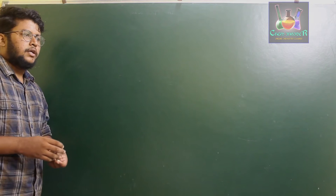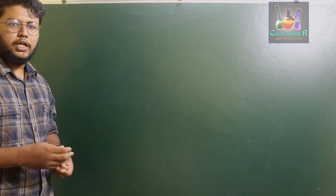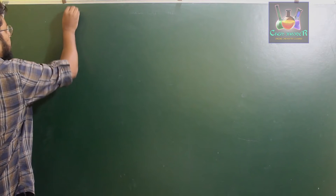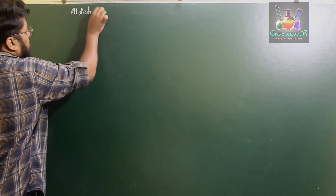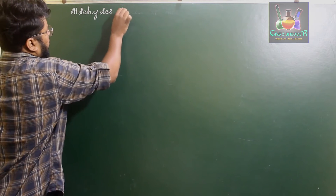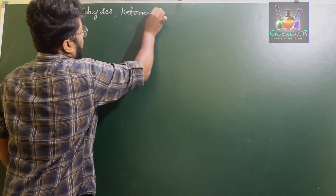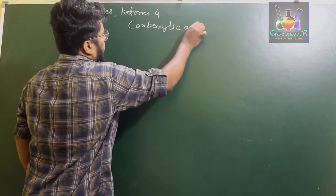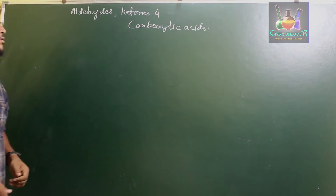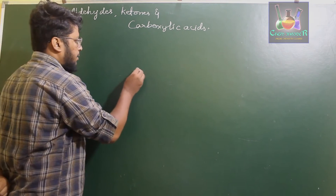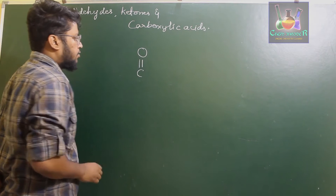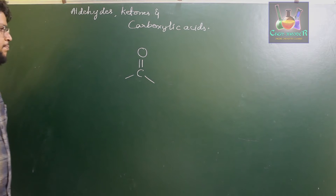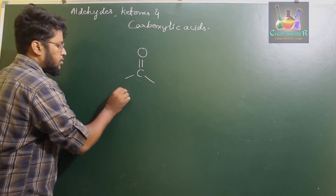Now, what happens if the carbon atom is bonded with oxygen through a double bond? If carbon is bonded with oxygen via a double bond in any hydrocarbon, then this particular carbon-oxygen double bond is called a carbonyl group.